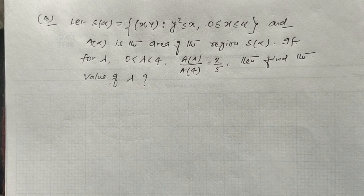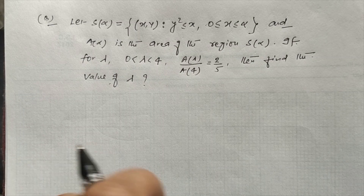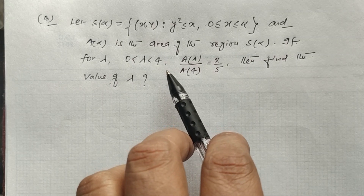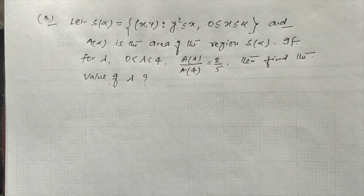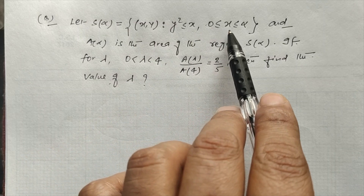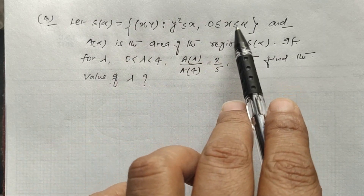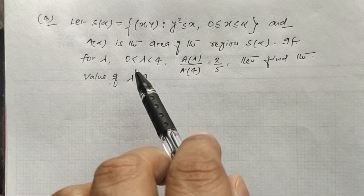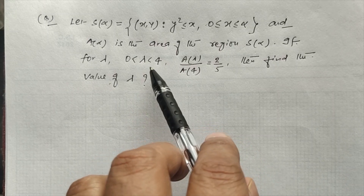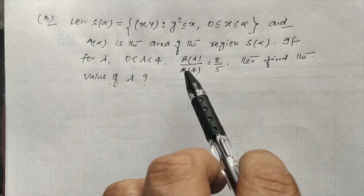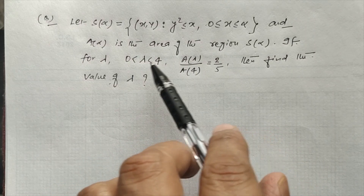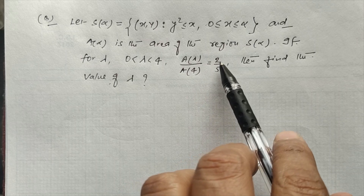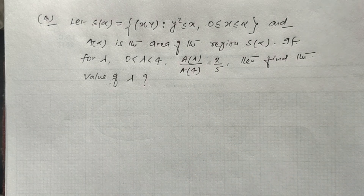Hello everyone. We have a problem related to area under curve, taken from JEE 2019. The problem defines a region and its area as A(α). We have a particular λ varying from 0 to 4, and the condition A(λ) divided by A(4) equals 2 by 5. We have to find the value of λ.